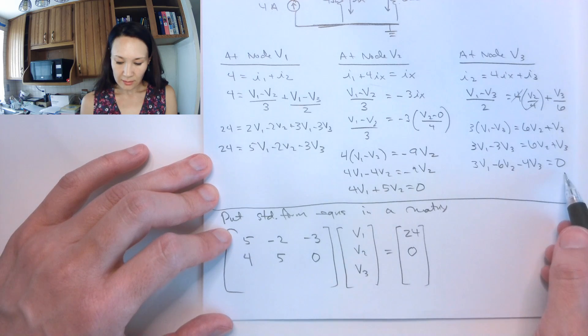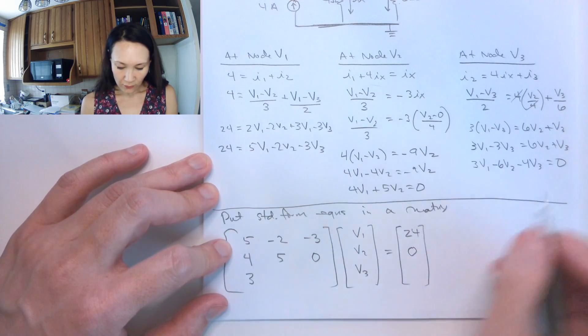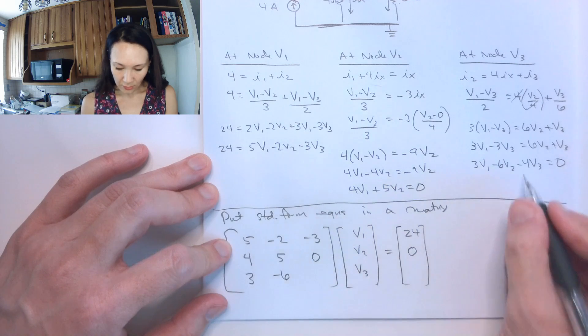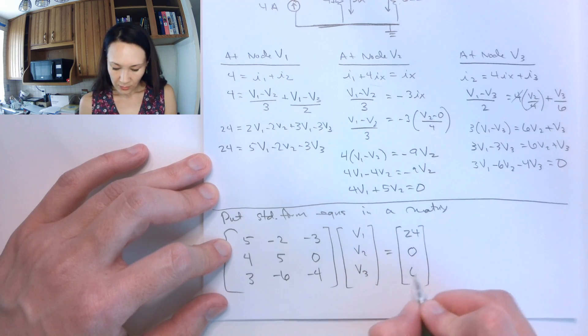Lastly, this third equation, the coefficient in front of the V1 is 3. Coefficient on the V2 is negative 6. Coefficient on the V3 is negative 4, and that's equal to 0. So here's my 0.